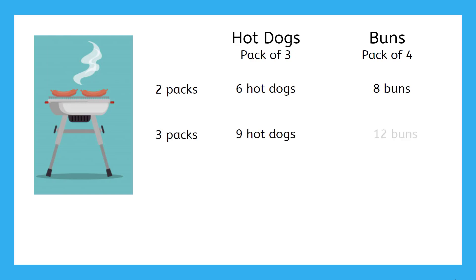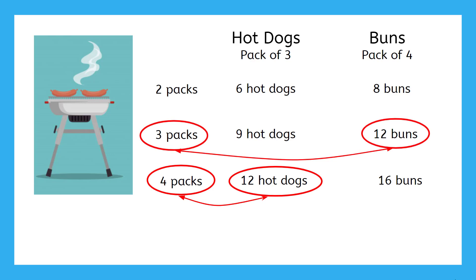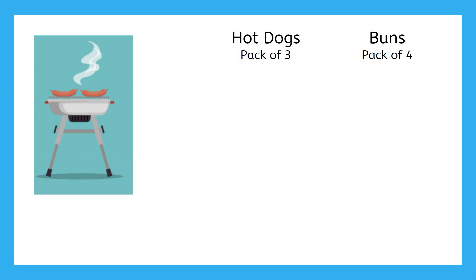If she buys three packs, she'll have nine hot dogs and twelve buns, but that's three buns left over. If she buys four packs, she'll have twelve hot dogs and sixteen buns — four buns left over. But wait, do you see a solution to Lucy's problem? That's right! Lucy can buy four packs of hot dogs and three packs of buns. Then she'll have twelve hot dogs and twelve buns — no leftovers!